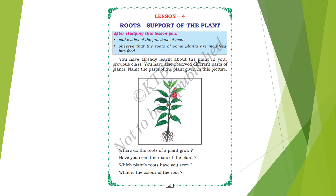You have already learnt about the plant in your previous class. You have also observed different parts of plants. Name the parts of the plant given in the picture. This is root, this is stem, this is flower, and this is leaf. Here you can see a fruit as well. There are so many parts.